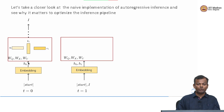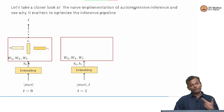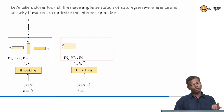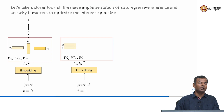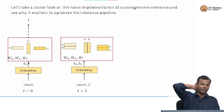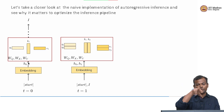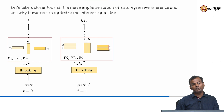Now at time step 2, you have start comma I. These two inputs are available to you and now you want to predict what the next word is going to be. Again you would do the same operations - you will compute Q1, Q2 by doing these transformations, then compute K1, K2 and then V1, V2. The new representations for H0 and H1 would be computed using the attention equations, and then you predict the next word - let's say 'like'.